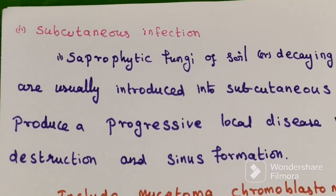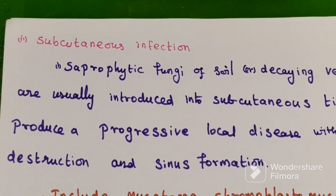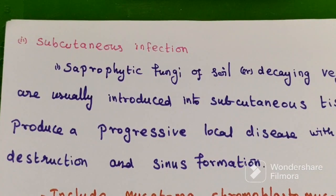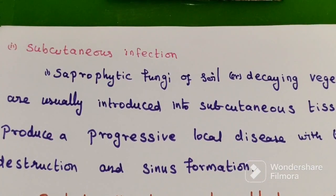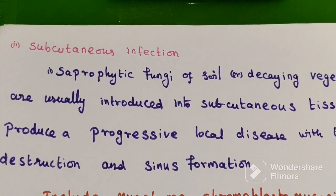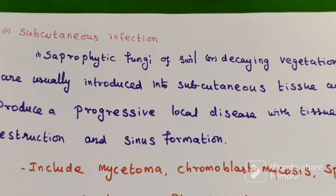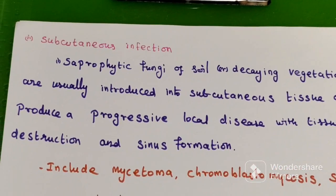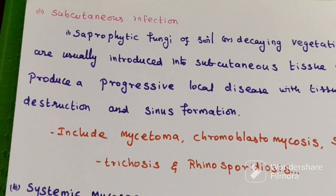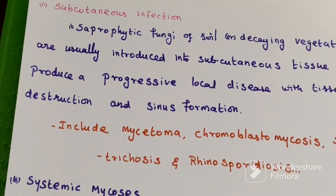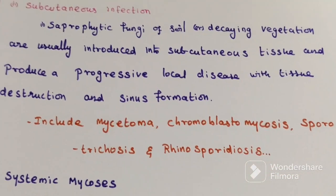Next one is subcutaneous infection. This fungus is present in soil and infects subcutaneous tissue. Examples include mycetoma, chromoblastomycosis, sporotrichosis, and rhinosporidiosis.